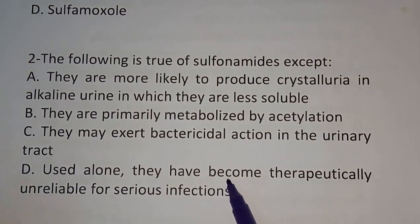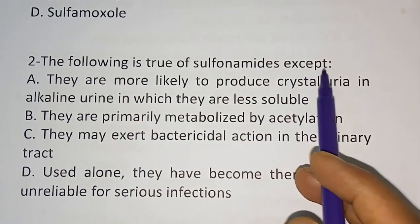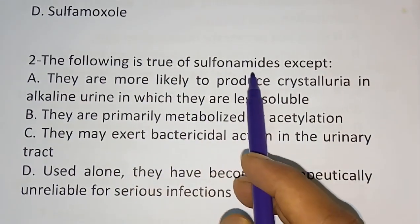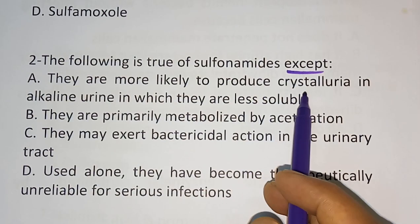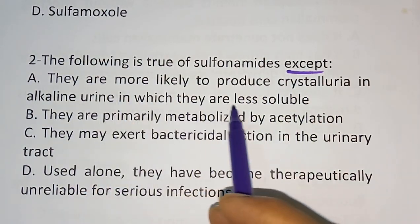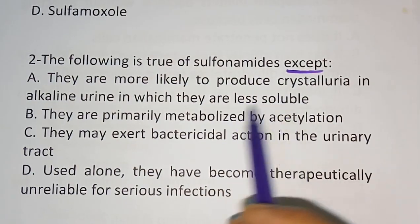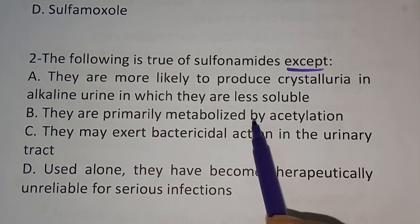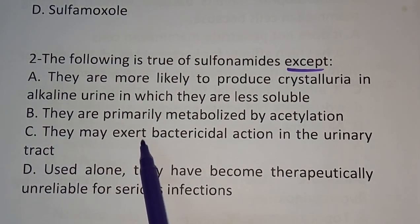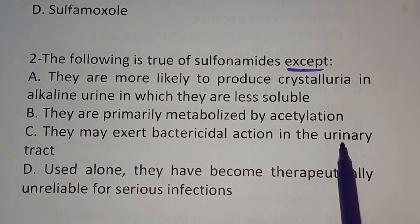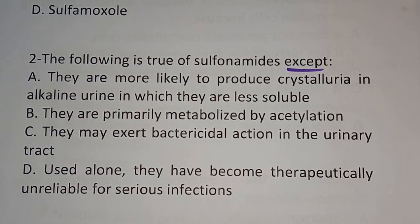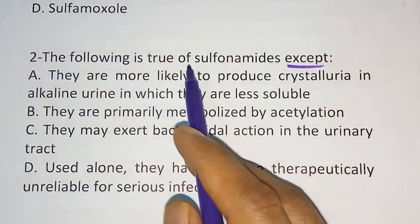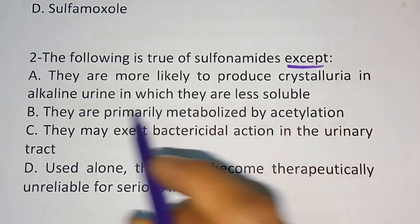Question number two: the following is true of sulfonamides EXCEPT. Option A: they are more likely to produce crystalluria in alkaline urine in which they are less soluble. Option B: they are primarily metabolized by acetylation. Option C: they may potentiate bacterial action in the urinary tract. Option D: used alone they have become therapeutically unreliable for serious infection. The correct answer is option A.